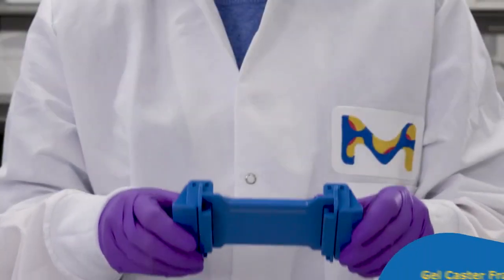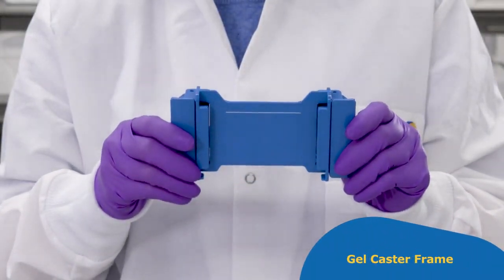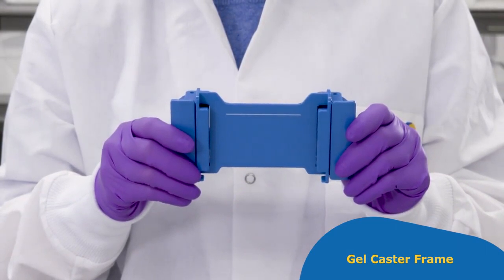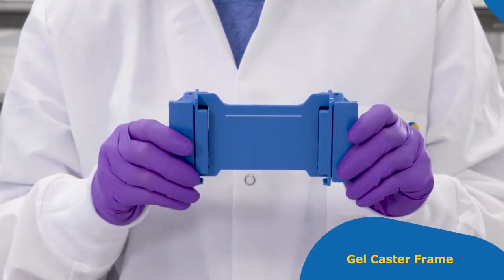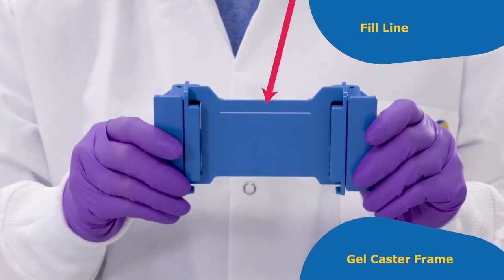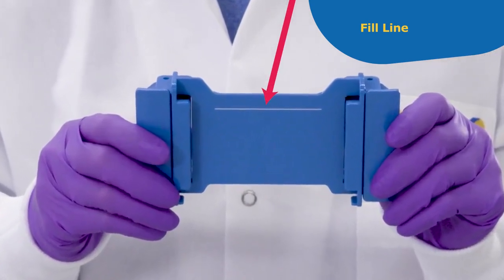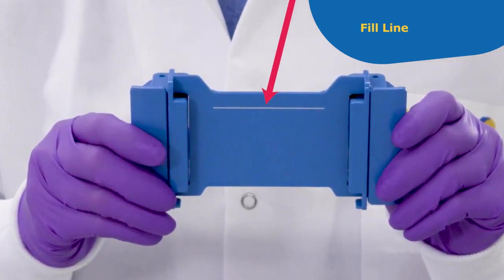The gelcaster frame evenly aligns the spacer and short plates and holds them in place for gel casting. The casting frame also displays a suggested fill line for the resolving solution, which results in a five millimeter stacker.